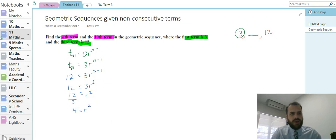Now, when I do this, I'll get r equals the square root of 4, so r equals plus or minus 2. So I actually have two values for r.